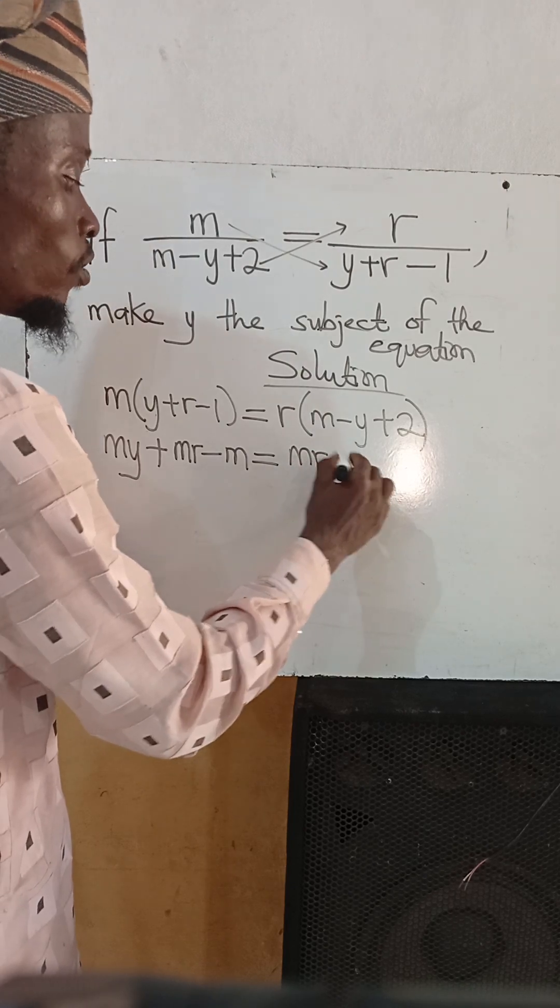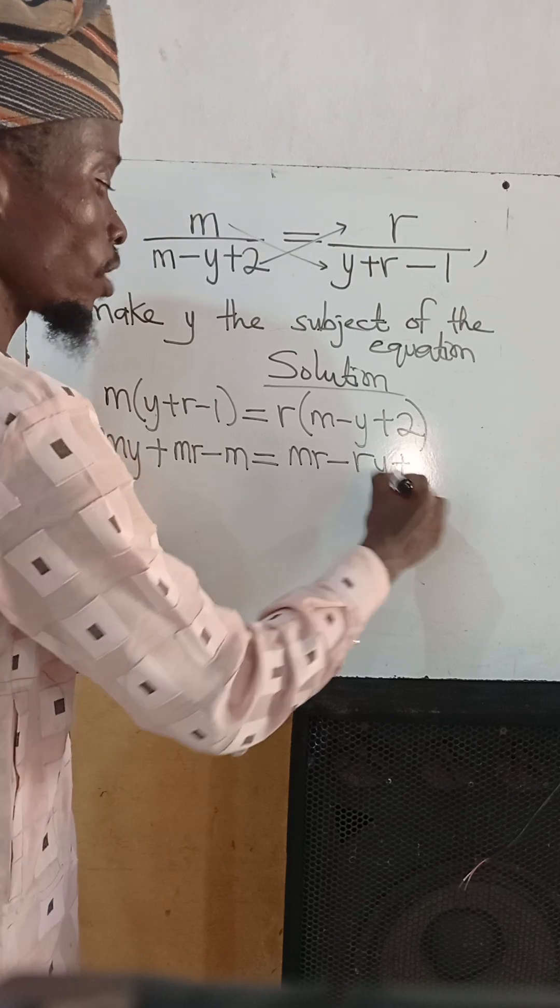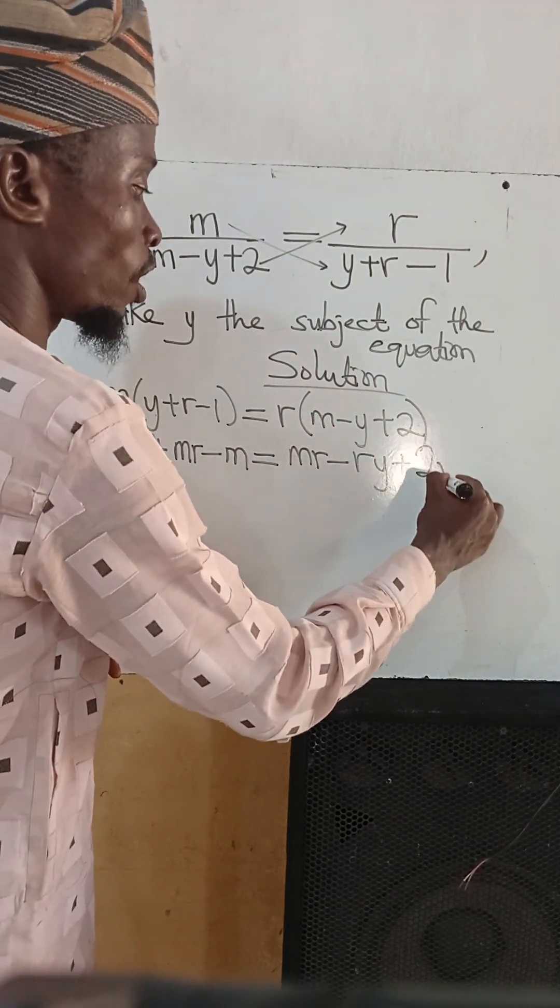Minus r times y gives us ry, plus r times 2 gives us 2r. So we have my plus mr minus m equals mr minus ry plus 2r.